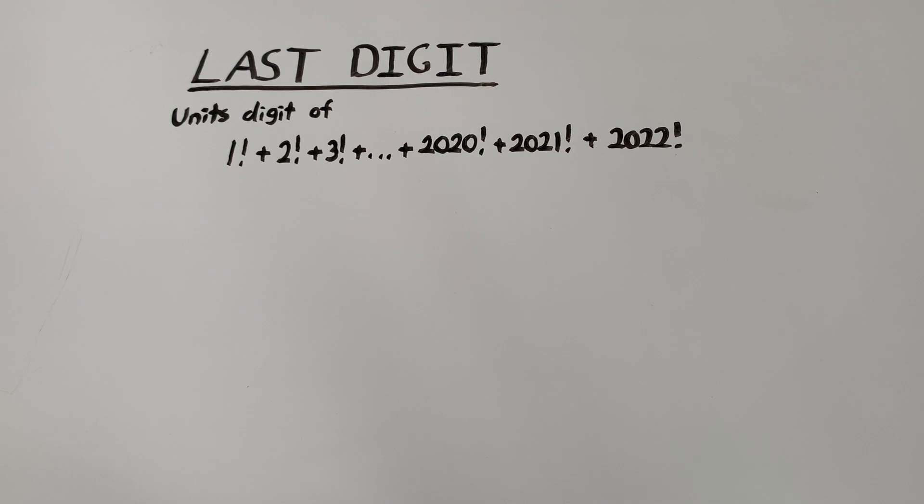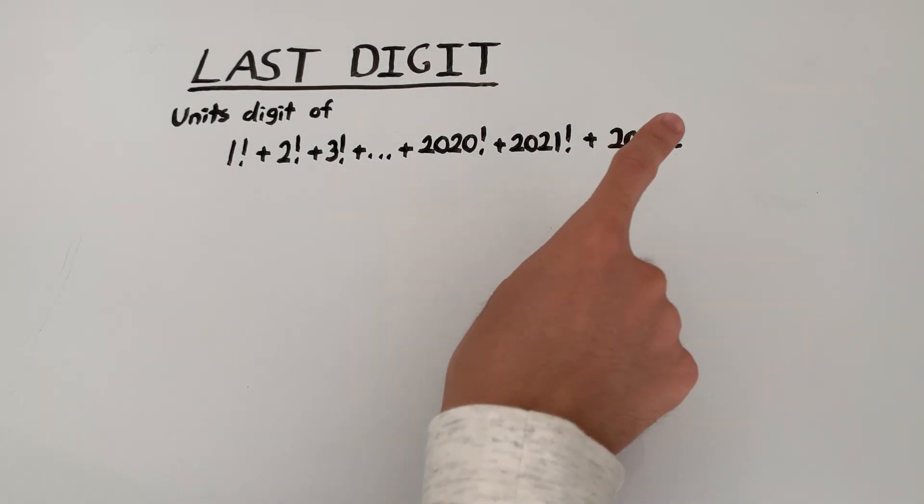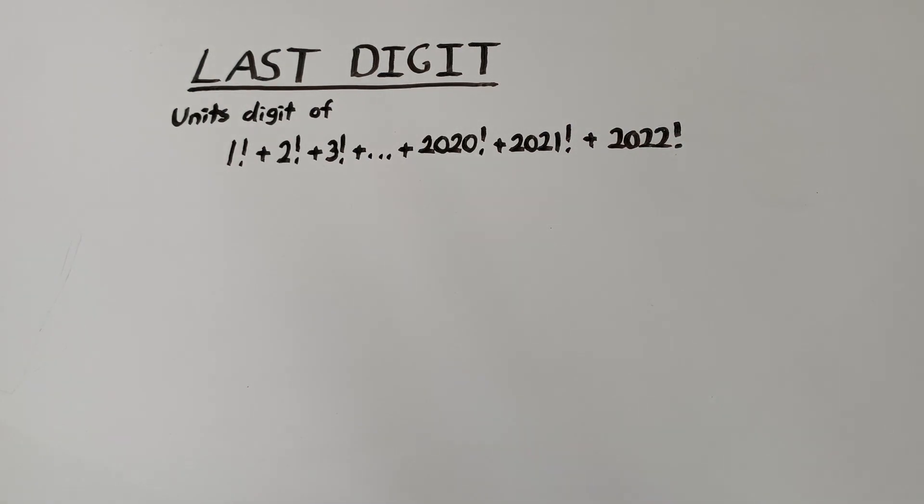Now in case you forgot what a factorial was, you can check out the video right over there. So this problem seems pretty hard because this sum is obviously going to get very, very big. But we don't need to find out what this whole thing equals to because we're only asked to find the units digit.